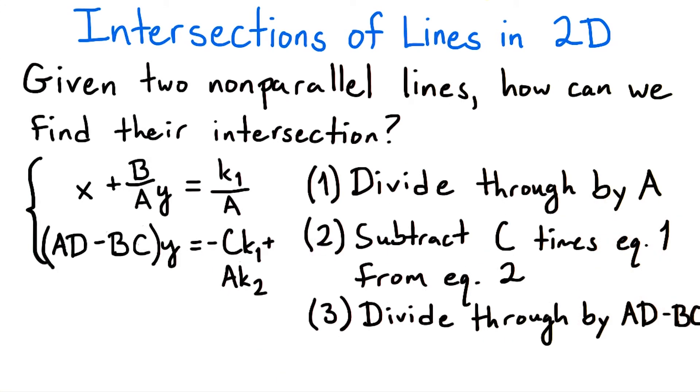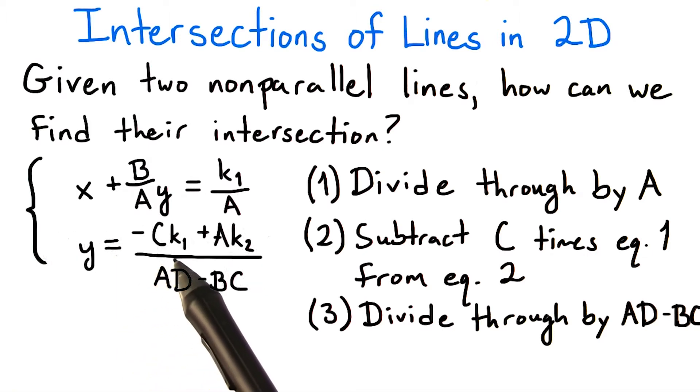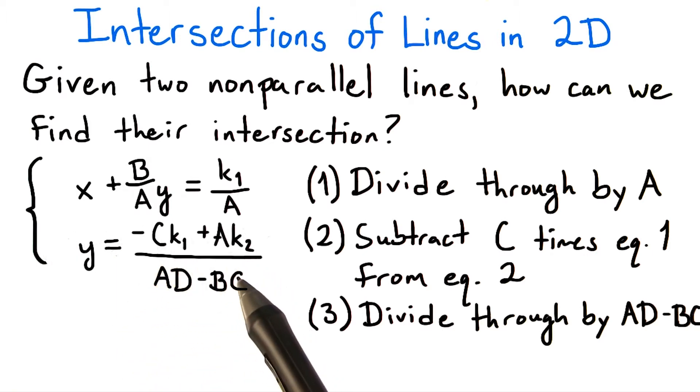So, ad minus bc cannot equal 0 under this assumption. Great. So that means we can divide through by ad minus bc. So, y equals negative ck1 plus ak2 over the quantity ad minus bc.